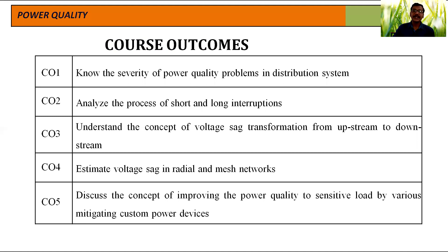The fourth outcome is to estimate voltage sag in radial and mesh networks. Voltage sag changes from network to network — the voltage sag value will be different in a radial network, and the same voltage sag will be different in the mesh network. We need to estimate what is the difference, and estimation of voltage sag in radial systems as well as mesh network systems, similar to integrated systems, we will discuss clearly.